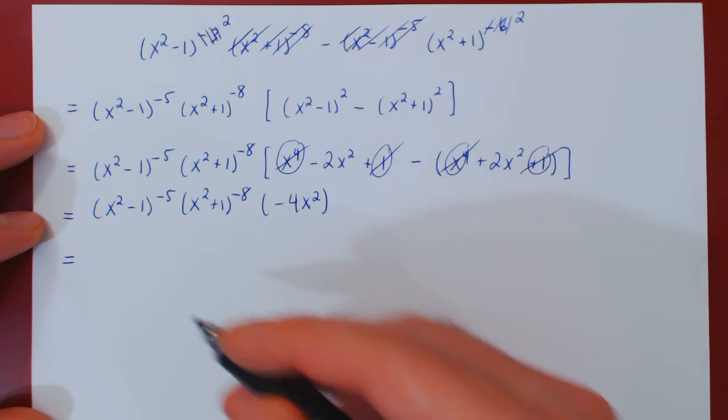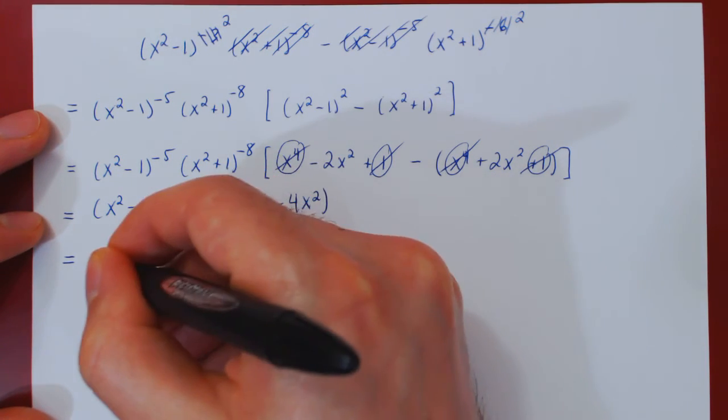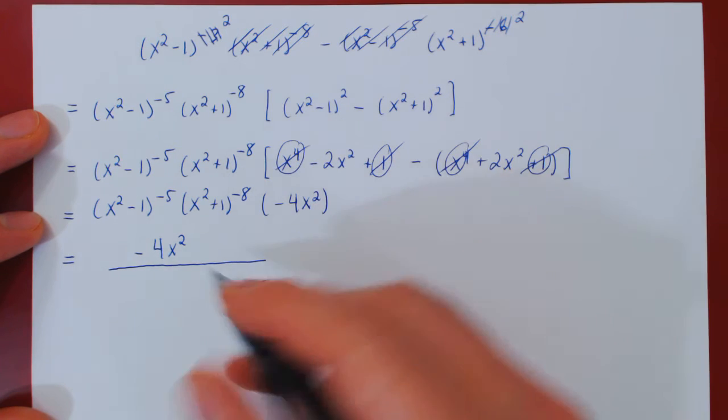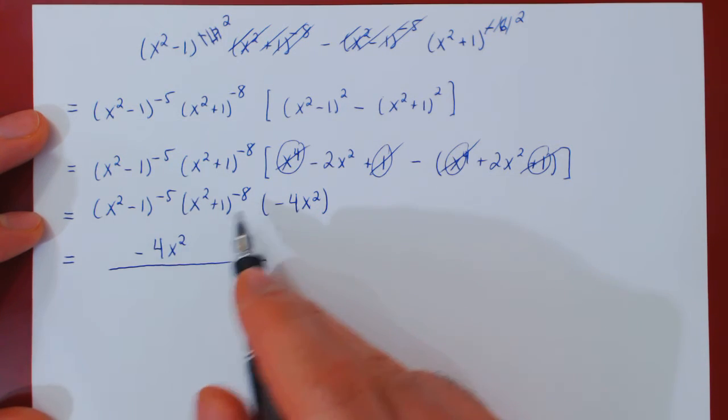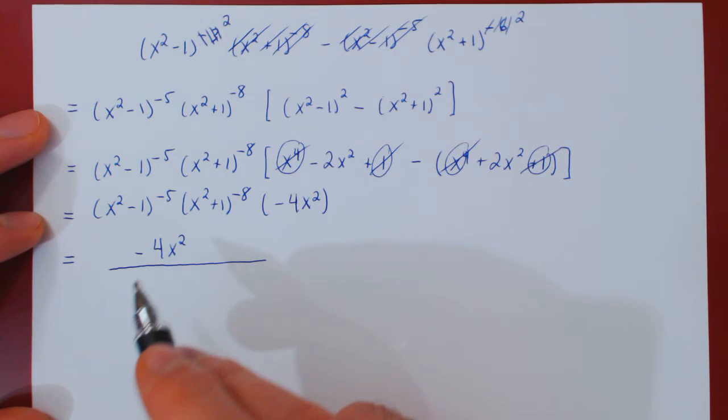So this can be rewritten as negative 4x squared on the numerator over, and again sending both of these down, we will negate the exponents. So the negative 5 and negative 8 will become positive 5, positive 8.